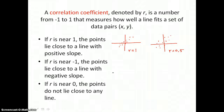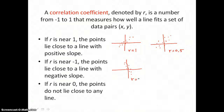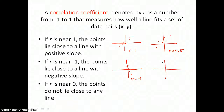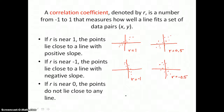If r is near negative 1, the points lie close to a line with negative slope. So if that data is tight and near a line that slants downward from left to right, we say that its r value is equal to negative 1. But if that data is loosely representing a line that slants downward from left to right, then we say that its correlation coefficient r is equal to negative 0.5 or close to negative 0.5.